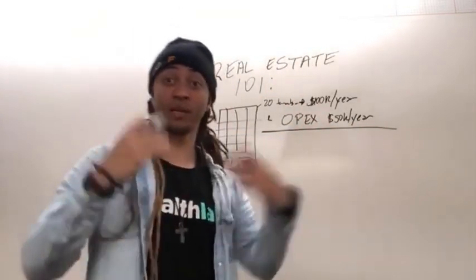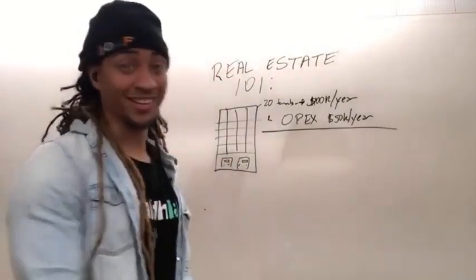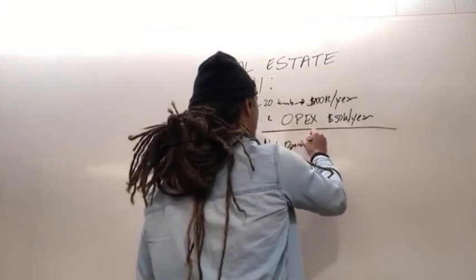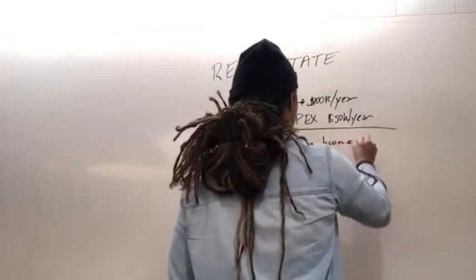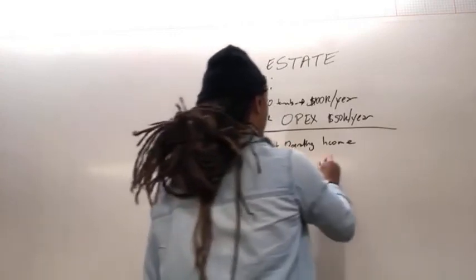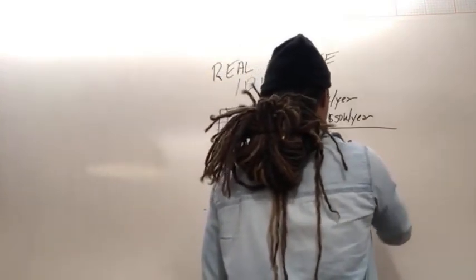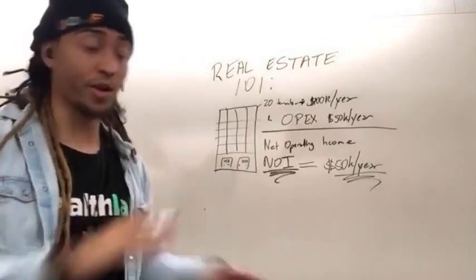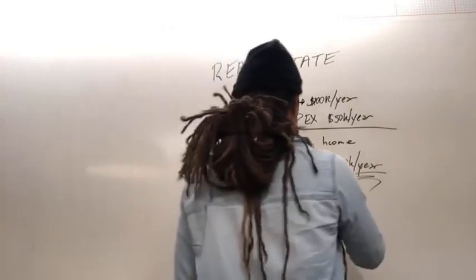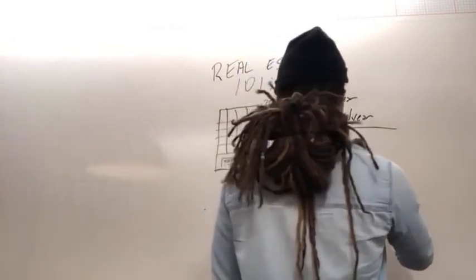Income comes in, money goes out — the money goes out to make sure that money can come in. That leaves you with your Net Operating Income, or NOI. In this case it would be $50K a year. So the equation, broken down very simply: NOI equals income minus expenses.